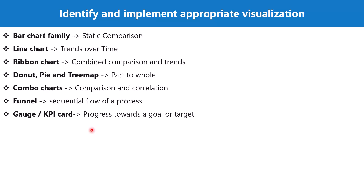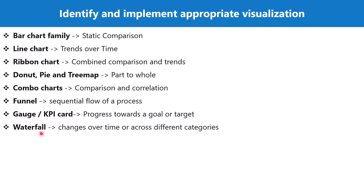In most real-world examples, you are trying to show the progress of any process, KPI, or metric towards a goal or target. You can do that using a gauge chart or a KPI chart, and you can also use the card visual for this particular application.